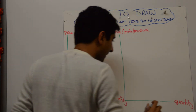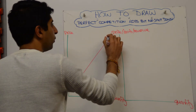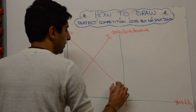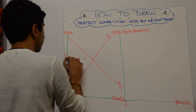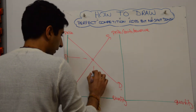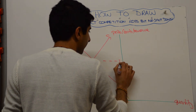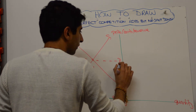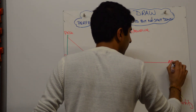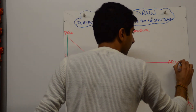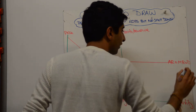On the x-axis, do the simple stuff. Draw your market supply, demand, equilibrium price, and equilibrium quantity. The firm is a price taker, so take that price across. That is the average revenue curve — it's also the marginal revenue curve and the demand curve for the firm.